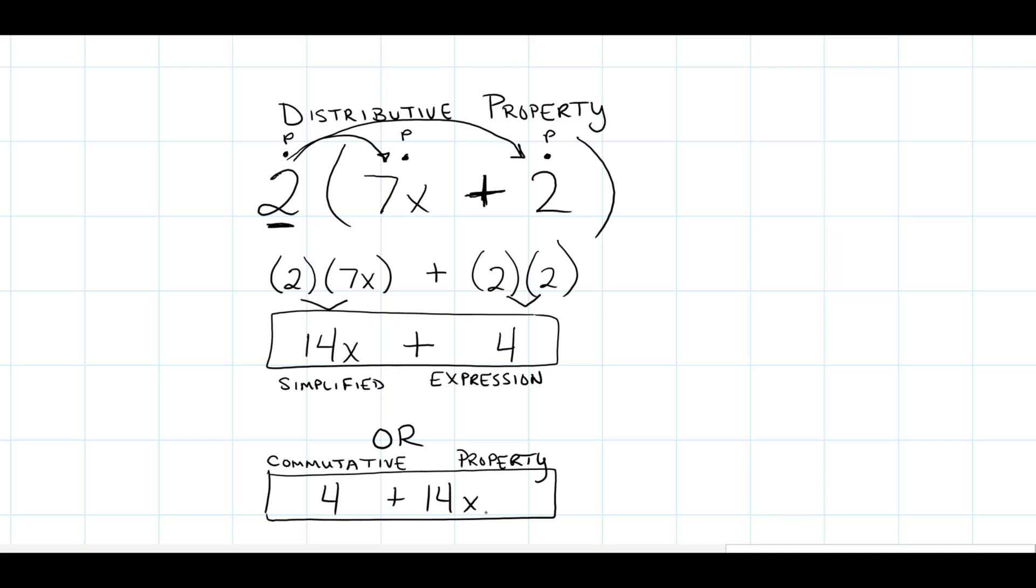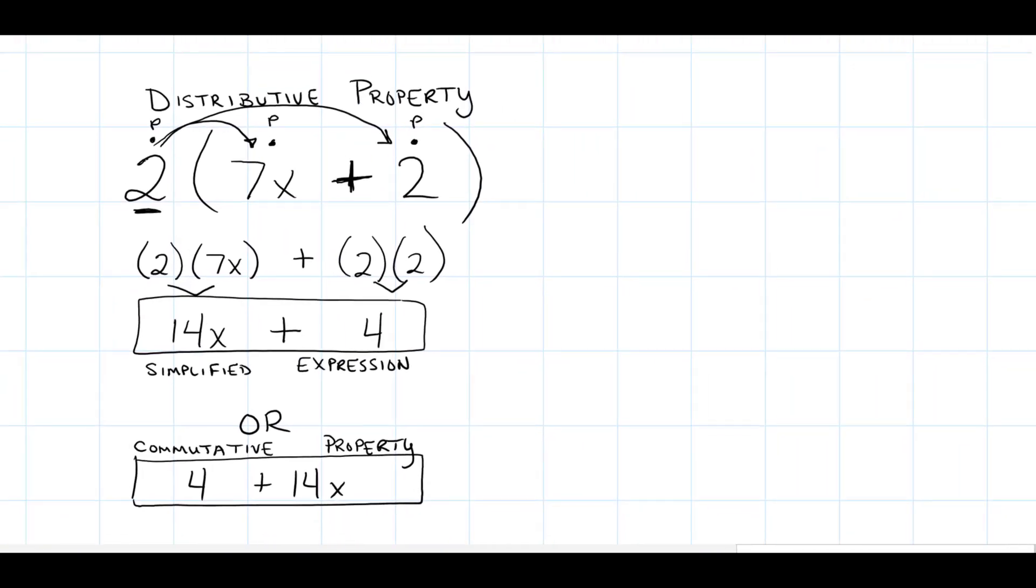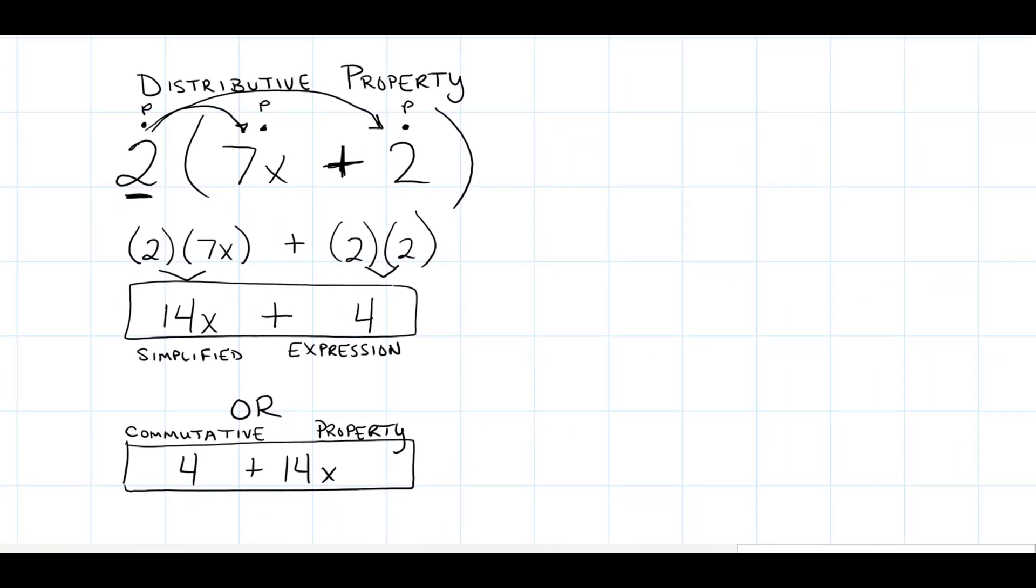So how is this going to play out today for factoring? Well, what we're really doing is we went from distributive property to factoring. We are now going to go back full circle—we're going to take this expression and we are going to factor it, which means our answer for today is going to look like the distributive property.